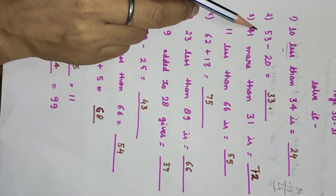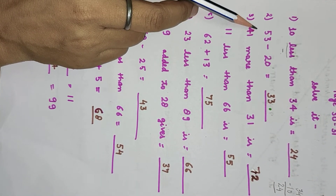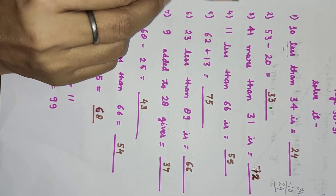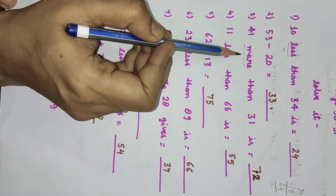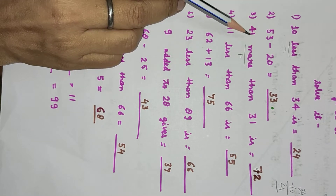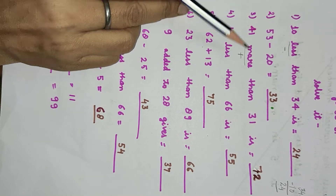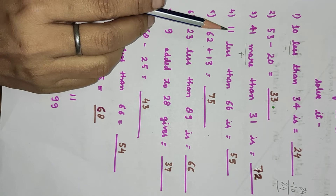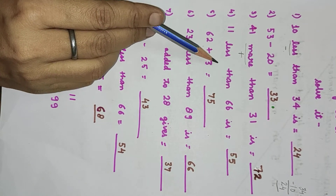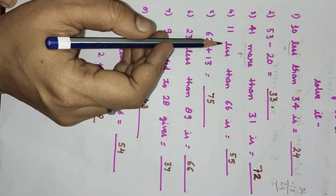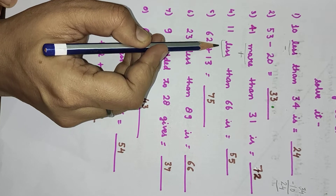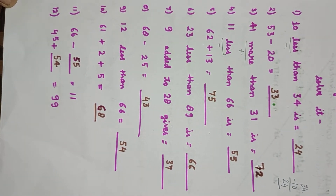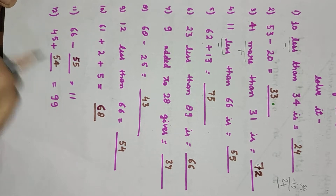53 minus 20 will be 33. Next: 41 more than 31 is. Now here 'more' means plus. More means add. We will add 41 and 31, it will be 72. Next: 11 less than 66 is. Less means minus.